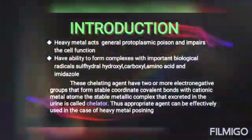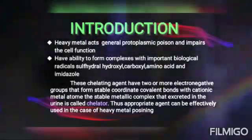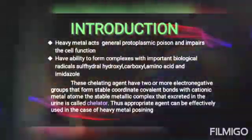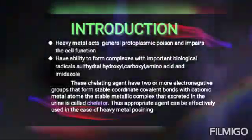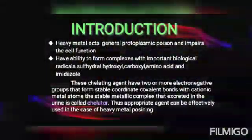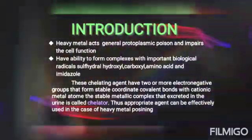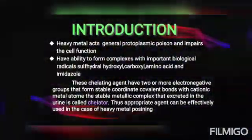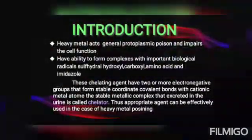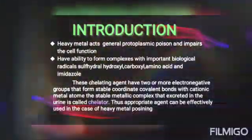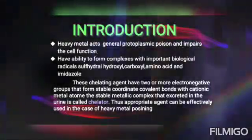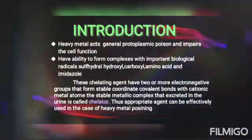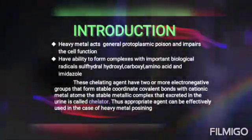Protoplasmic poison means the substance or material that can damage or kill the living cells. Hence, the activity or function of the cell gets reduced. These heavy metals have the ability to form complexes with important biological radicals like sulfhydryl, hydroxyl, carboxyl, amino acids, etc.